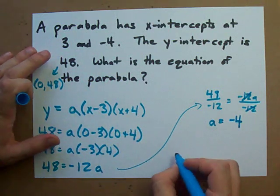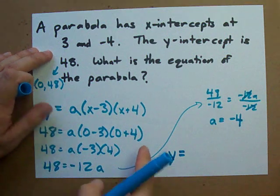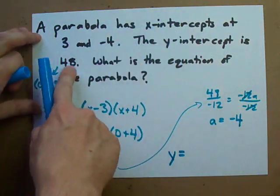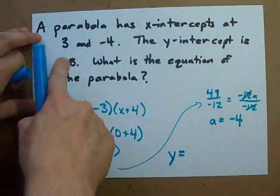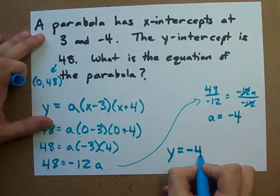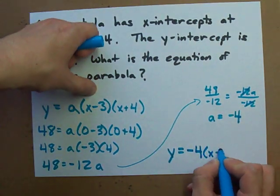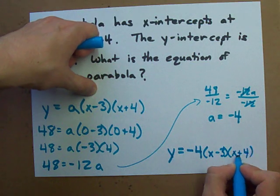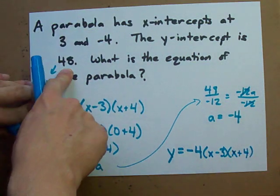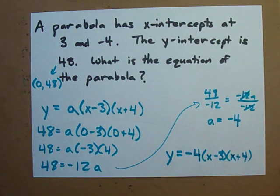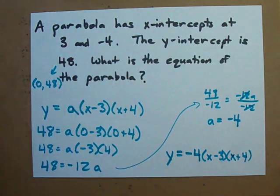So the equation of the parabola that has a y-intercept of 48 is y equals negative 4 times (x minus 3)(x plus 4). If we were given a different y-intercept, we'd have a different a, but the x-intercepts would remain the same.